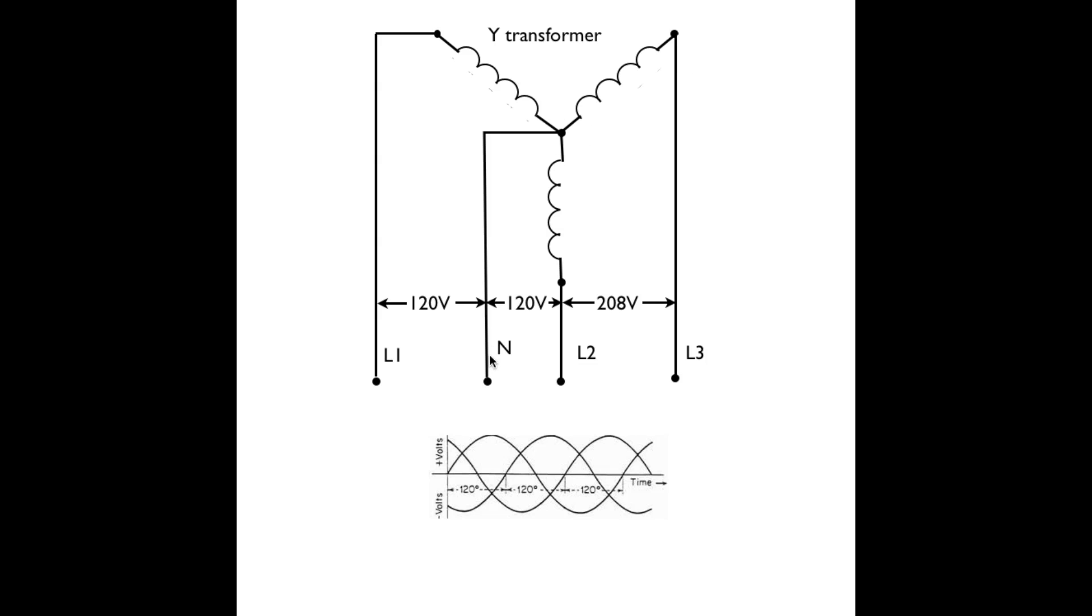Now, neutral is what we call a return path. It really isn't, but because this is AC current. But it does not show any potential.